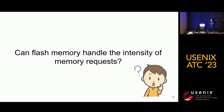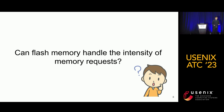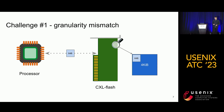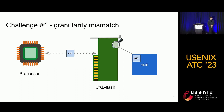However, even though this is a very exciting opportunity, we still wonder if flash memory can really handle the intensity of memory requests, because there are three major challenges. First, there's granularity mismatch. Host requests are typically in 64-byte granularity, whereas flash memory manages data in page granularity, which can be a few kilobytes. This mismatch can cause high read-modify-write traffic and degrade performance.